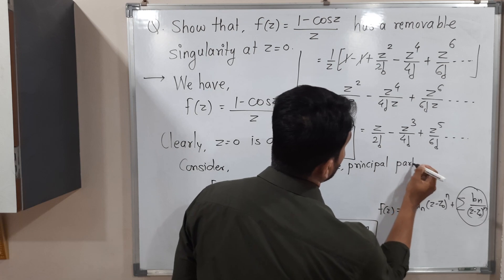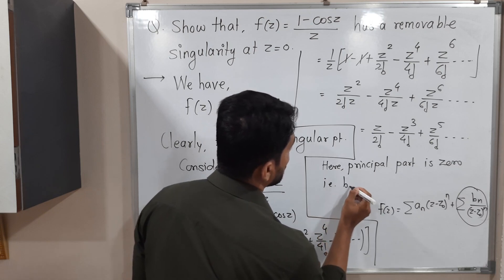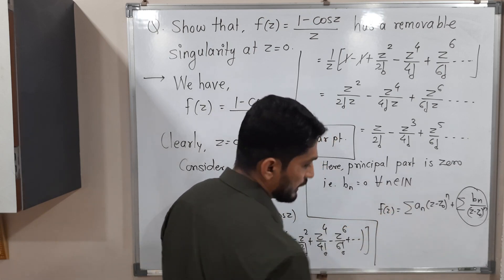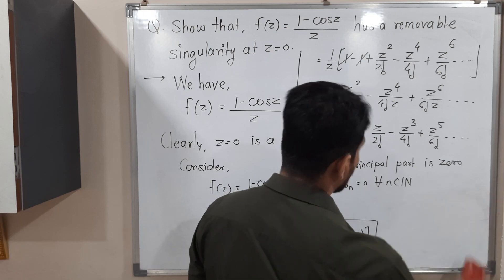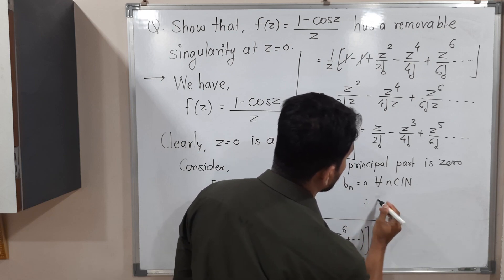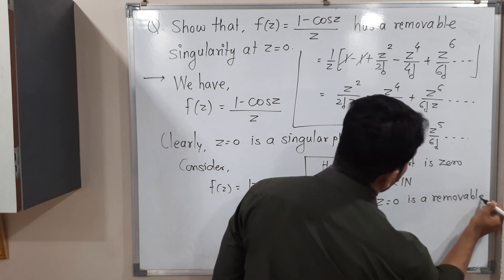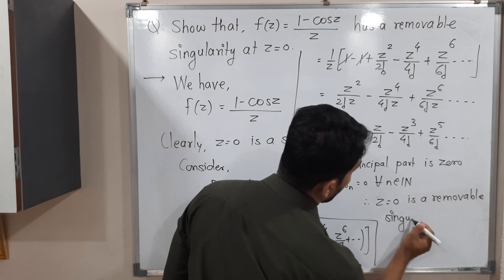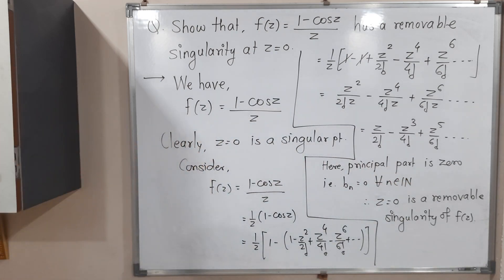The principal part is 0, that is b_n = 0 for all n belonging to the set of natural numbers. Therefore, z = 0 is a removable singularity of f(z). In this way we proved that z = 0 is a removable singularity of the given function. Thank you, see you in the next video.